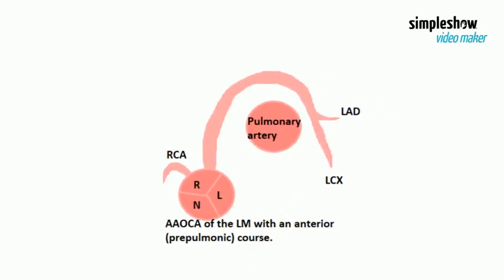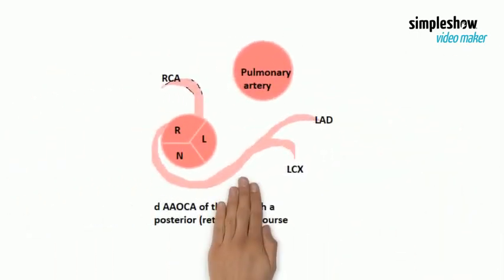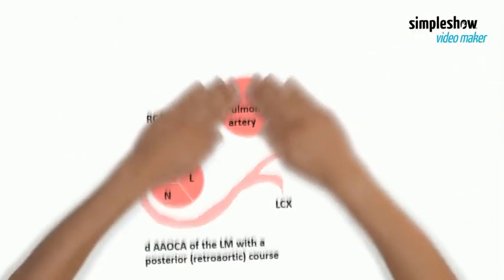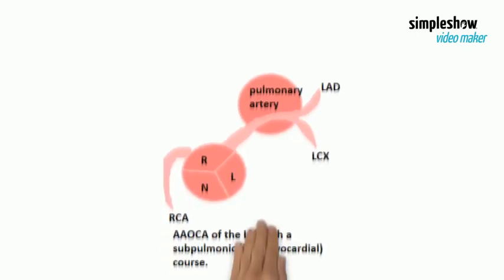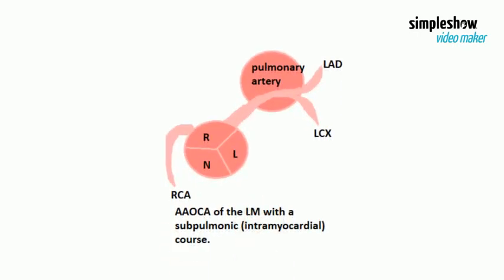This is an example of anomalous origin of the left main with an anterior pre-pulmonic course. Here the left main is anomalously originated with a posterior, that is retro-aortic, course. In another variant, the course is subpulmonic or intramyocardial.